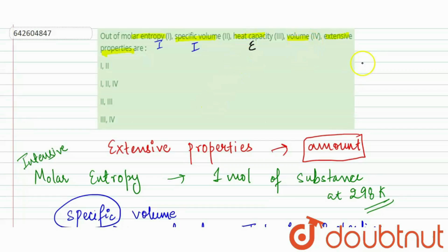Now, if we talk about volume, then we know that density is equal to mass upon volume. Here our volume will be mass upon density. Our volume depends upon the mass of the substance, so it is also our extensive property.